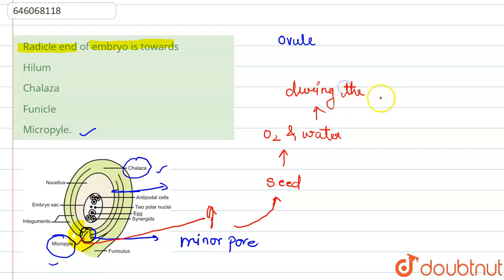So you have to understand that the micropylar end of an ovule is the place from where the origin of the radicle takes place. So the radicle end of the embryo is known as the micropylar end.